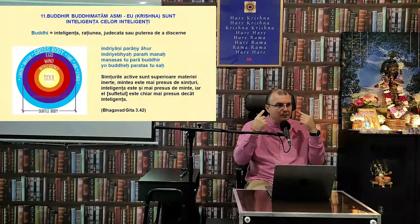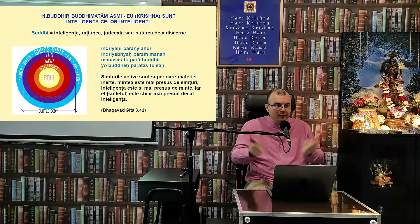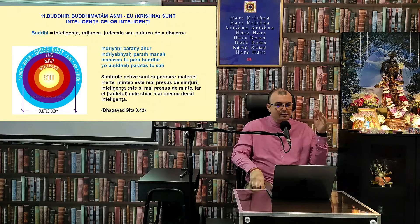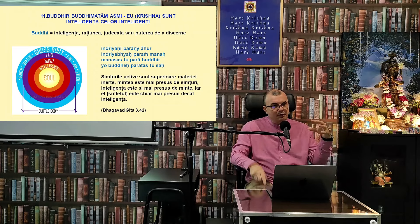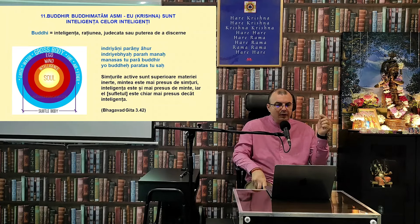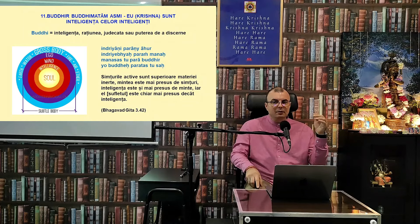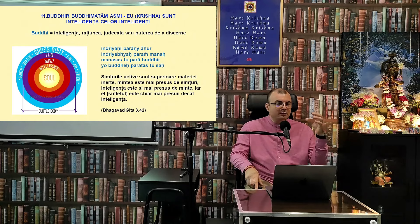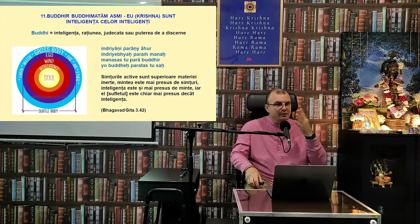Krishna descrie poziția inteligenței într-un frumos verset din Bhagavad Gita: Simțurile active sunt superioare materiei inerte — vederea, auzul, limba sunt superioare materiei. Mintea este mai presus de simțuri — mintea noastră este capabilă să stăpânească simțurile. Inteligența este și mai presus de minte. Mintea are de obicei două funcțiuni: Sankalpa și Vikalpa — îmi place, nu-mi place.